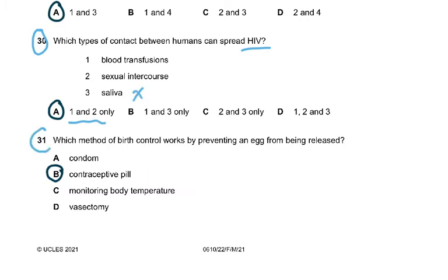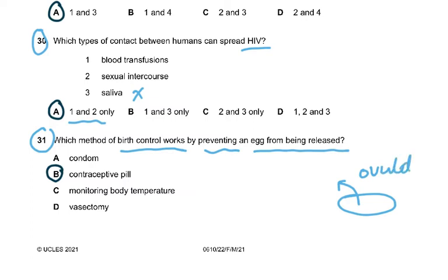Question 31: which method of birth control works by preventing an egg from being released? The ovary releases the egg — that process is called ovulation. A condom only prevents sperm from entering the female tract. Monitoring body temperature lets you gauge when ovulation will occur so you can avoid intercourse. Vasectomy is a surgical procedure where the sperm ducts are cut so sperm cannot enter the female tract.